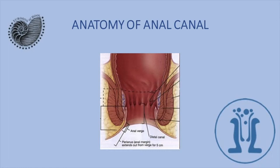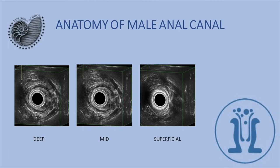I'd like to show you the anatomy of the anal canal on ultrasound. Here is the internal anal sphincter, here is the external anal sphincter, and here are the perineal muscles — in the deep, mid, and superficial positions.